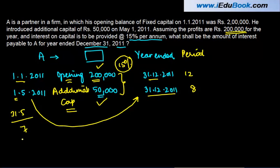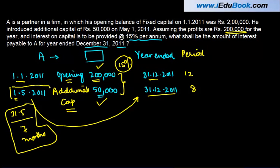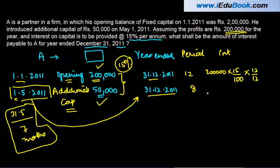Be careful about the dates when doing these questions. Interest is calculated as: Principal × Rate × Time. For the opening capital, the principal is ₹2 lakh, rate is 15%, and time is 12 months, i.e., 12/12 = 1 year. So interest on opening capital = ₹2,00,000 × 15% × 1 = ₹30,000.